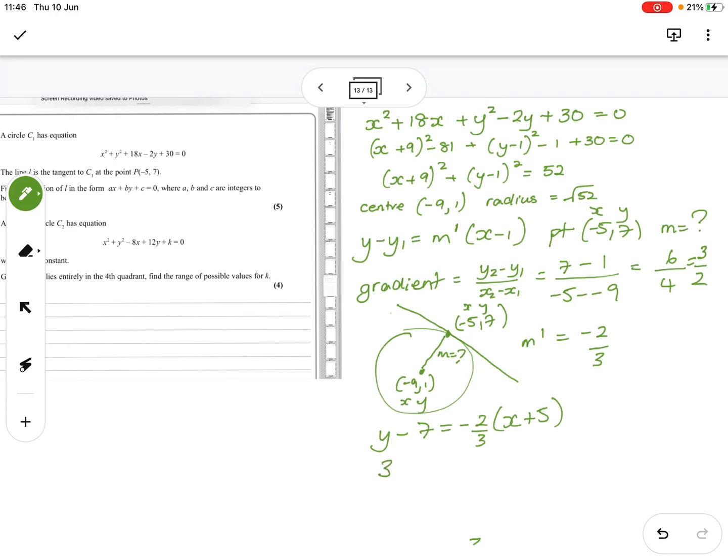So they don't want it in that format, so I'm going to times by 3. So I've got 3y minus 21 equals minus 2x minus 10. So I'm going to bring that over this way. So I've got 2x plus 3y minus 21 plus 10 minus 11 equals 0. So that's my equation finished.